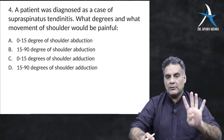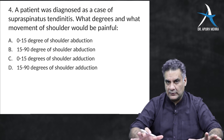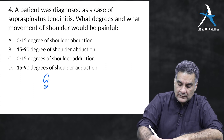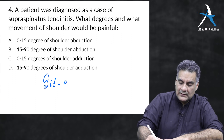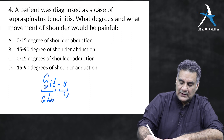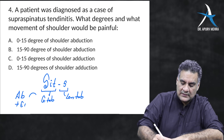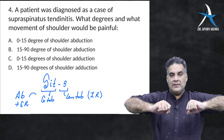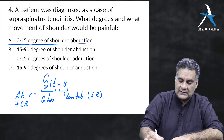Question four: a patient diagnosed with supraspinatus tendinitis — at what degrees and what movement of the shoulder will be painful? The rotator cuff muscles are supraspinatus, infraspinatus, teres minor, and subscapularis. The first three insert on the greater tuberosity and perform abduction and external rotation. Subscapularis inserts on the lesser tuberosity and is an internal rotator. Supraspinatus specifically performs abduction from 0 to 15 degrees, so if it is inflamed, this range of shoulder abduction is affected.